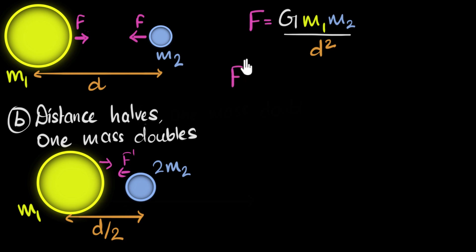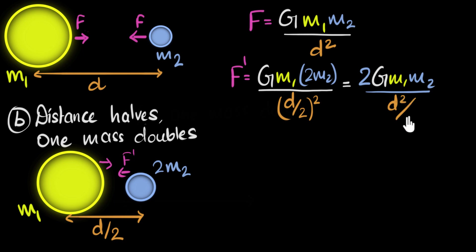All right, so we'll do the same thing as before. The new force, F dash, is going to be G times mass of the sun remains M1. But the mass of the earth has now become 2M2. That's the new mass of the earth. And so instead of M2, we put 2M2 divided by distance has become d by 2 the whole squared. So this is d by 2 the whole squared.